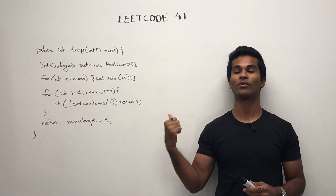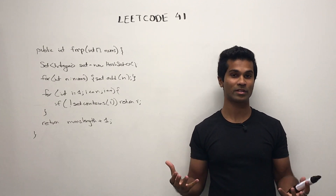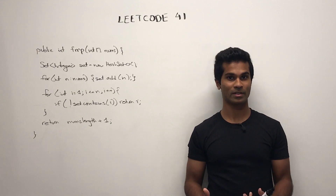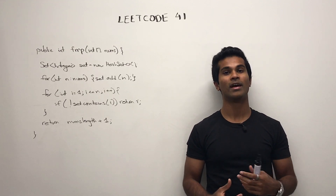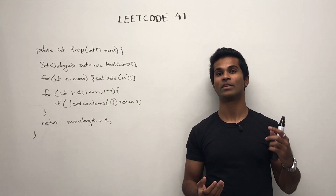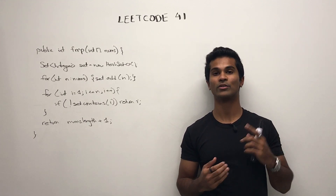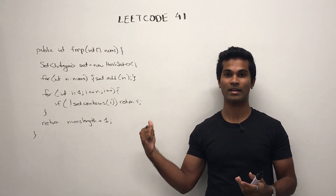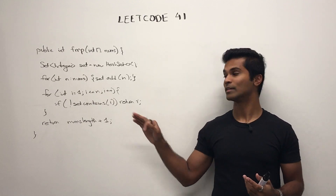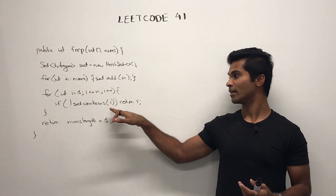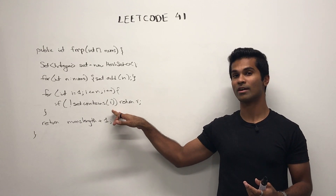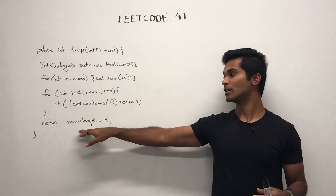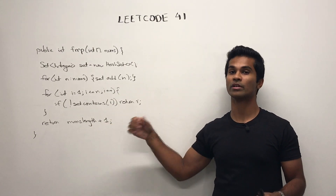This is the brute force code, and it's pretty simple. We just have a set and we're going to collect all the elements in the nums array, and then we're going to iterate from the number 1 to n and see which number is missing from this set. And if it doesn't return a 1 or 2 or 3 up till n, then we can just say nums length plus 1 is our answer.